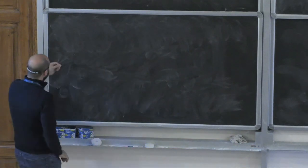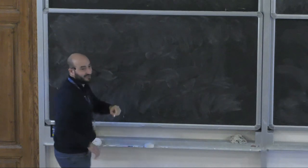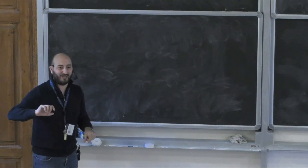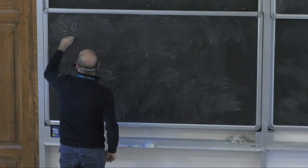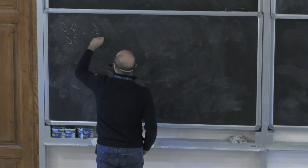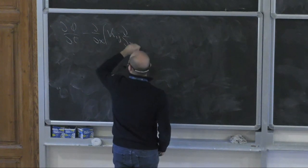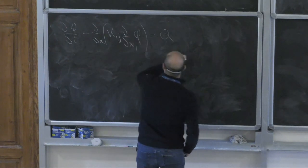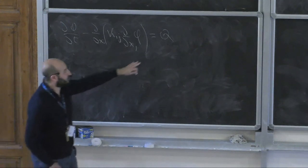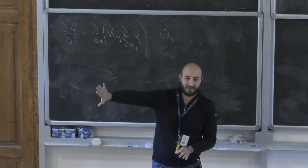Practically, this means we do not solve a self-consistent model from scratch. Instead, we solve a model in the diffusion approximation where we write a source term Q for the cosmic rays on the right-hand side. This source term is whatever comes out of the acceleration phase, which we factorize and treat independently.